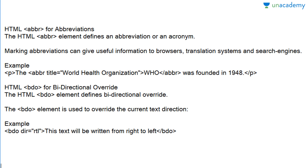Now let's read about abbreviations. The abbr tag defines abbreviations. Marking abbreviations can provide useful information to browsers, translation systems, and search engines. Abbreviations are the short form of their full text. Example: &lt;p&gt;The &lt;abbr title="World Health Organization"&gt;WHO&lt;/abbr&gt; was founded in 1948.&lt;/p&gt;. The output displays: 'The WHO was founded in 1948.' When you move your cursor over WHO, a small box appears showing the full form: World Health Organization. This is the abbreviation tag.